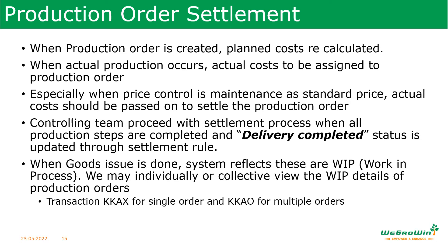Next is production order settlement. When a production order is created, planned costs are calculated. When actual production occurs, the actual cost is assigned to the production order. When the price control is maintained as standard price, the actual cost may be passed on to settle the production order. The controlling team will do the settlement process. When they complete this activity, the status of the production order changes from 'Delivery Completed' to the settlement rule status. Transaction KKAX is used for single order settlement and KKAO for multiple orders. This activity is better done with the support of the controlling team — it is integration between production planning and controlling.